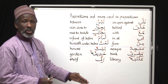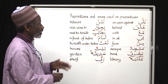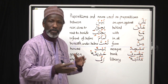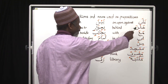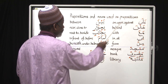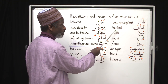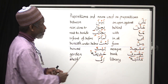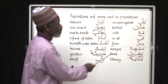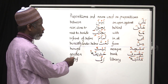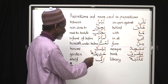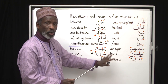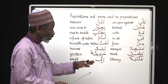Here are a few prepositions — there are more, but we'll work with these. Some of these are nouns used as prepositions; strictly speaking they are not prepositions, but they function as such and the effect is the same. 'Ala' — on, upon, or against; 'baina' — between; 'khalfa' — behind; 'bijiwari' — near or close to, next to or beside; 'ma'a' — with; 'fi' — in or at; 'amama' — in front of or before; 'min' — from; 'tahta' — beneath, under, below. These are the prepositions on pages 20 and 21 of the book.